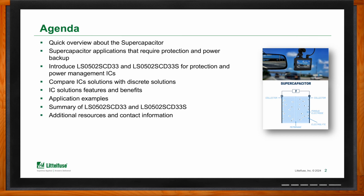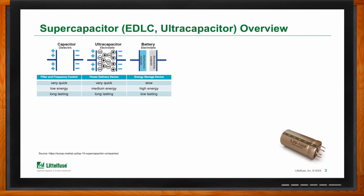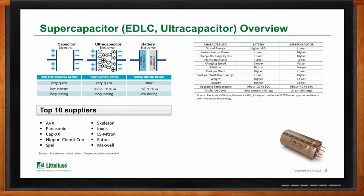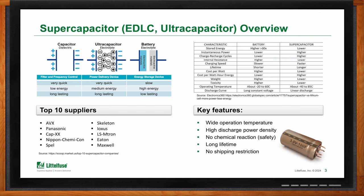Give us a brief rundown on supercapacitors. A supercapacitor falls in between a regular capacitor and a battery. A capacitor basically functions on a physical process; a battery is more of an electrochemical process. Supercapacitors are sometimes otherwise known as EDLCs, ultracapacitors, or electric double-layer capacitors. Key features and benefits include very wide operating temperatures, high discharge power densities, no chemical reactions from a safety perspective, very long lifetime, almost unlimited charge and discharge cycles, and no shipping restrictions. No chemical reaction is really the key feature, along with very high discharge rates in the end application.